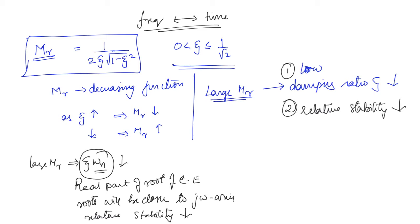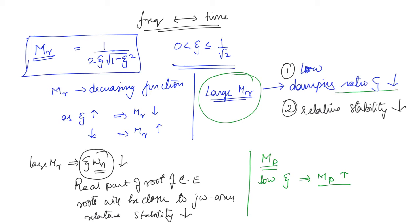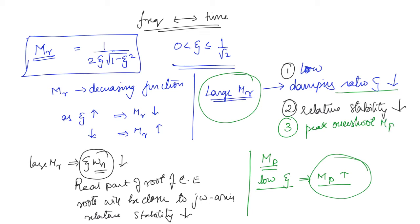If we consider the peak overshoot Mp, which is a time domain specification: more damping results in lesser peak overshoot, and lesser damping results in higher peak overshoot. For low damping ratio, the peak overshoot will be higher because there is less damping taking place. Since large Mr implies low damping ratio, and low damping ratio implies high peak overshoot, a large resonant peak also implies that the peak overshoot is high.